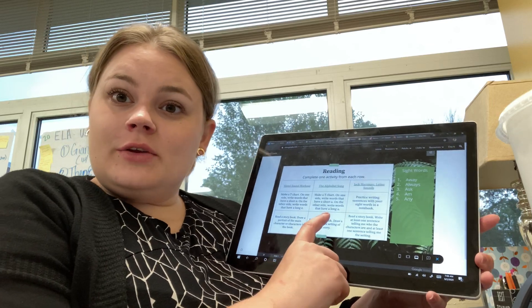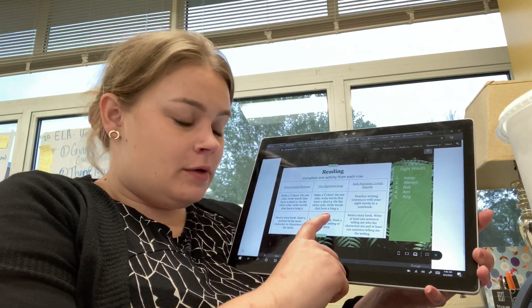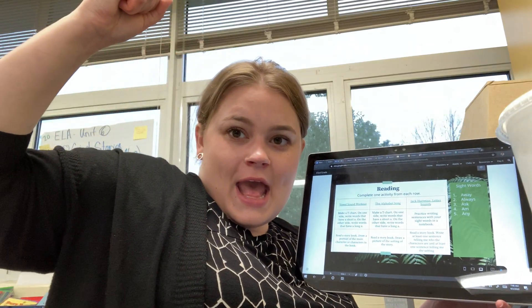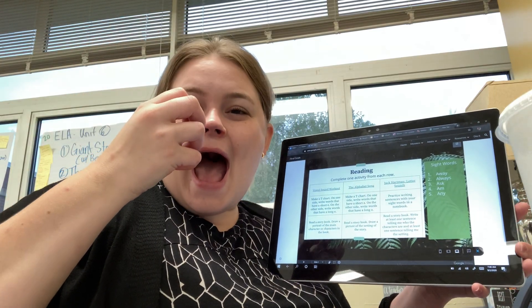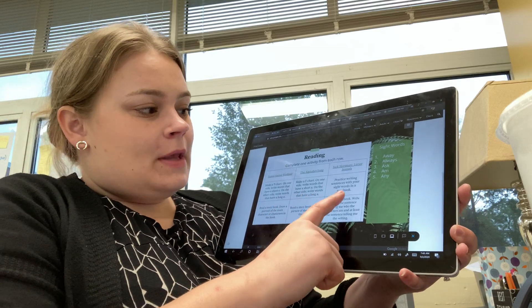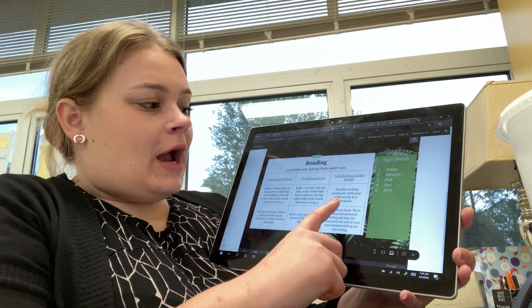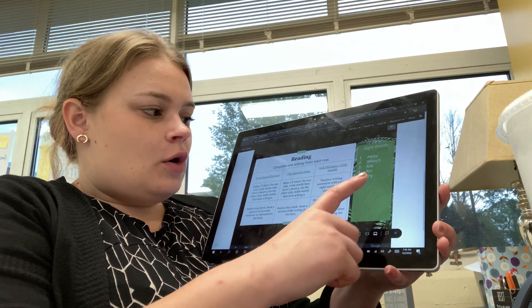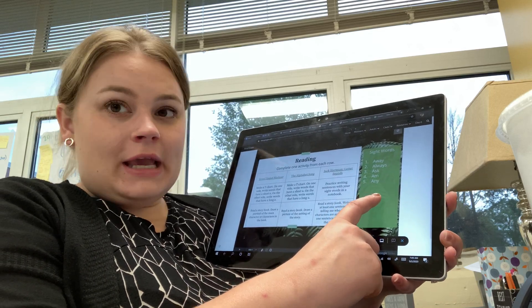Your next choice is to do the same thing but with the A sound. So, A, apple, apple. So with A. And then your last choice is to practice writing sentences with your sight words in a notebook.